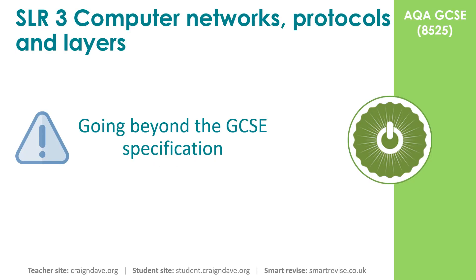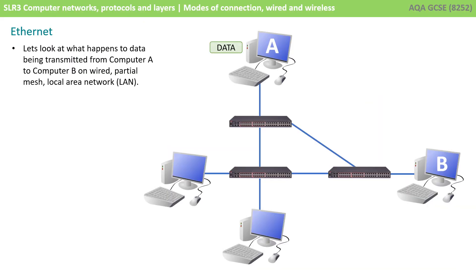The rest of this video goes a little beyond the GCSE specification, so there's no need to take any more notes. It's well worth watching, however, as it helps add an extra level of understanding behind how Ethernet and Wi-Fi actually work, and it's excellent preparation for A-level. Let's look at what happens to data being transmitted from computer A to computer B on a wired partial mesh local area network.